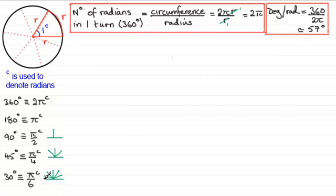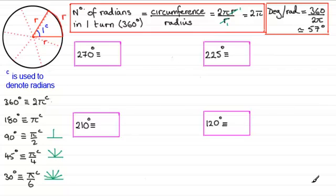Now where am I going with this? Well, there's going to be other angles that you're going to be asked to give exact values for. And here's just a selection: 270 degrees, 225 degrees, 210 and 120 degrees. What are these going to be identical to? Well, with a little bit of practice, you'll realize that these angles and others are multiples of some of these angles here.